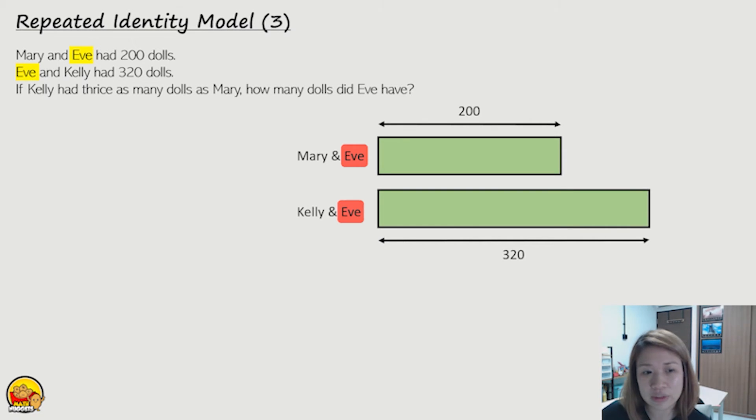Okay, so in this case, if Eve is repeated, Eve appears in both the top bar and the bottom bar, I'm going to cut out one portion and call it Eve. And that's Eve at the beginning in front. The reason why I draw it in front is so that I can compare the back later on. It's easier to compare.